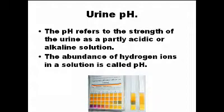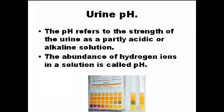The control of acidic or alkaline urine is another important function of the kidney. When the pH is not normal, the body is not functioning well. The abundance of hydrogen ions in a solution is called pH — the concentration of hydrogen ions.